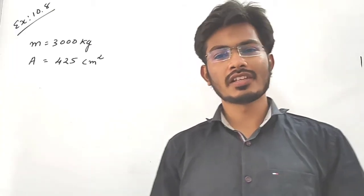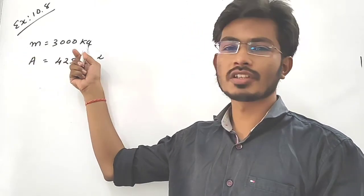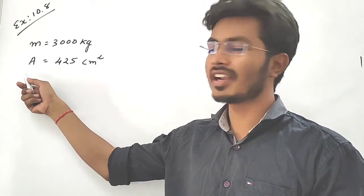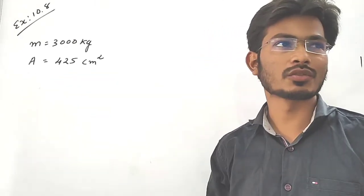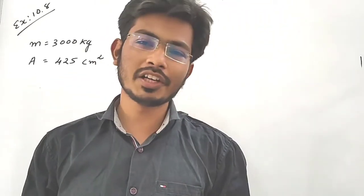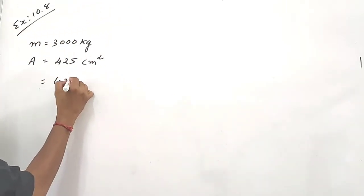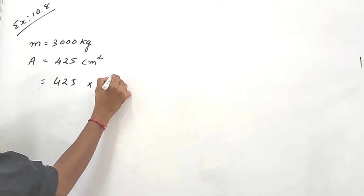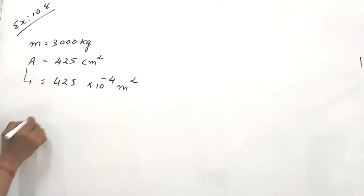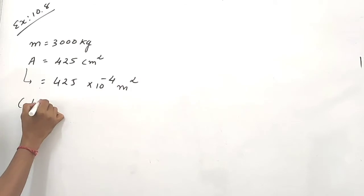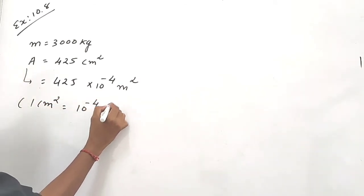Dear students, the given data are: mass m = 3000 kg, and area = 425 cm². We must convert this into meter square. Therefore, 425 × 10⁻⁴ m², since 1 cm² = 10⁻⁴ m².